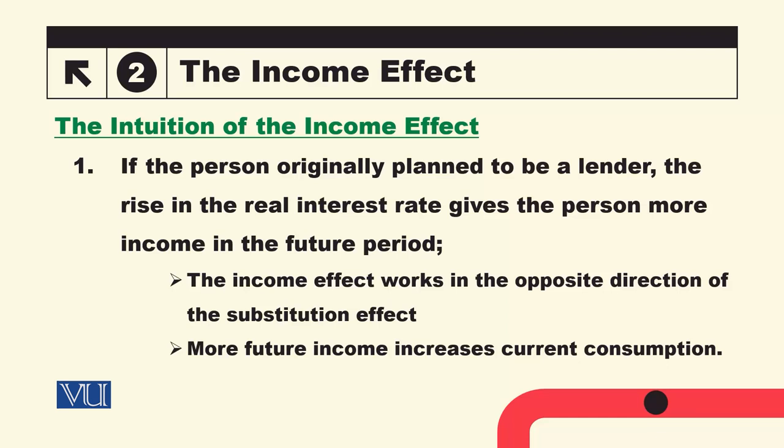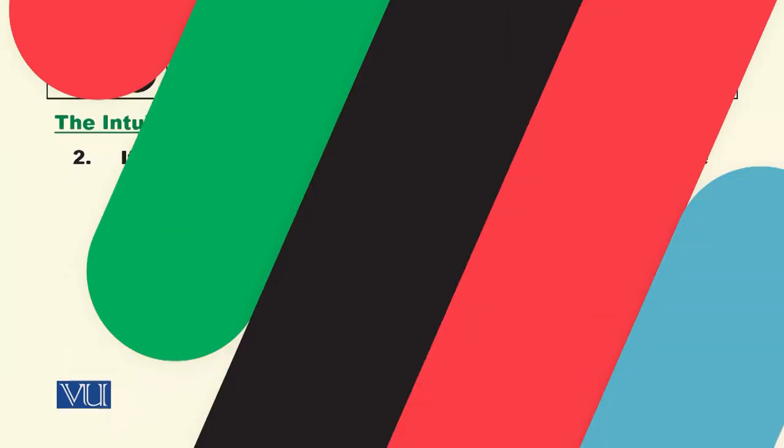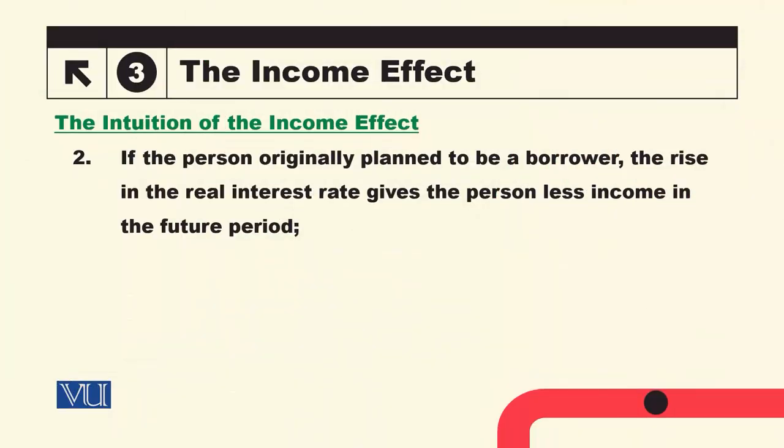یہ بھی ہم جانتے ہیں کہ the income effect works in the opposite direction of the substitution effect۔ Substitution effect کی وجہ سے جب interest rate بڑھتا ہے تو current consumption expensive ہو جاتی ہے، اس لئے وہ current consumption کو کم کر دیتا ہے۔ لیکن income effect کی وجہ سے جب اس کی income lender ہے اور اس کی income میں اضافہ ہو گیا ہے، اس کی وجہ سے وہ current consumption کو بڑھائے گا — تو دونوں opposite direction میں move کریں گے۔